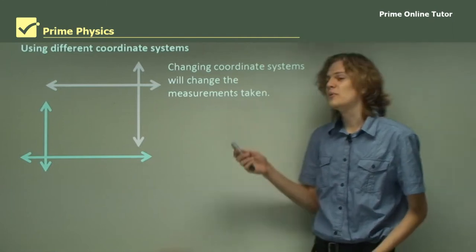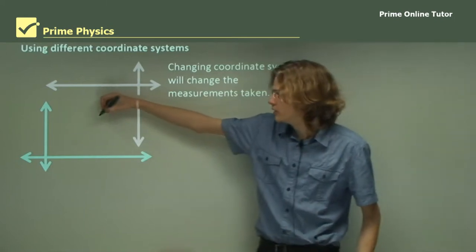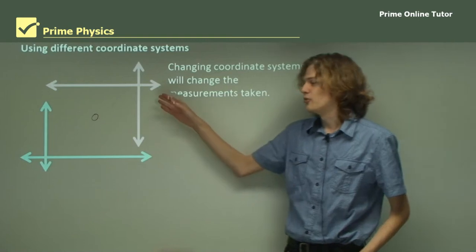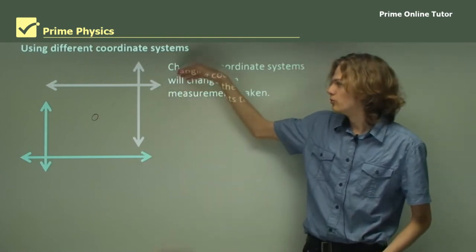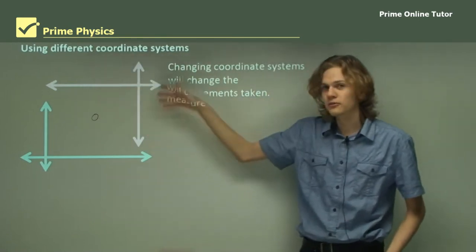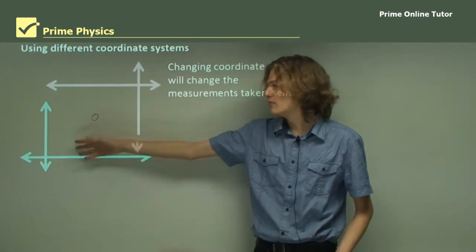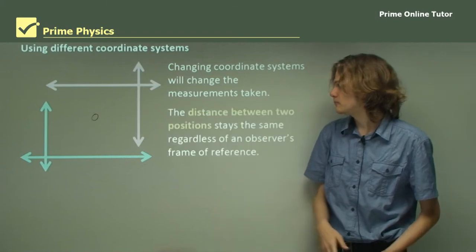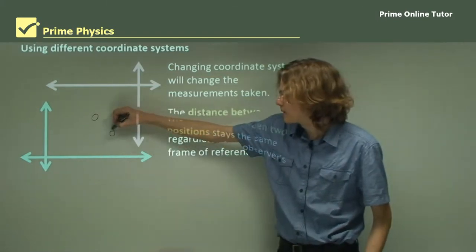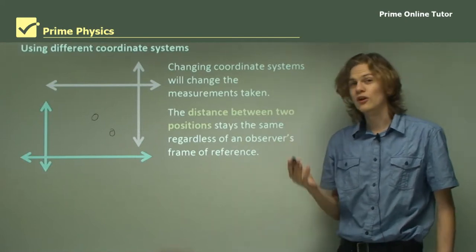Changing coordinate systems will change the measurements taken. If we have a dot in the middle, the red coordinate system will see it as having a negative x value and a negative y value, whereas the blue coordinate system will see it as having a positive y value and a positive x value. But the distance between two points always stays the same, regardless of where your frame of reference is.